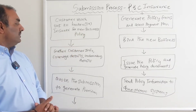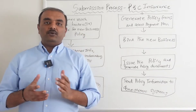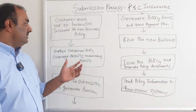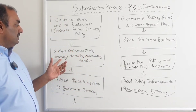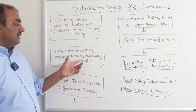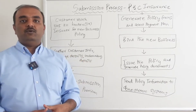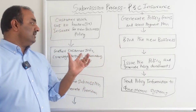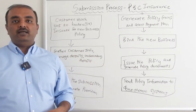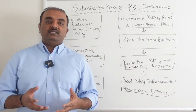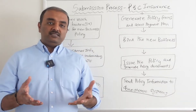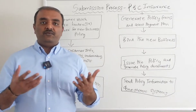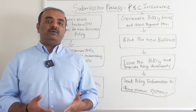Then what happens is the insurance company and the broker collect some basic details about the customer — the coverage details required and some specific underwriting information. When I say customer info, that includes their location, their name, and everything else.